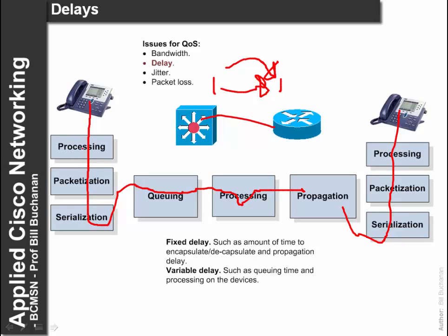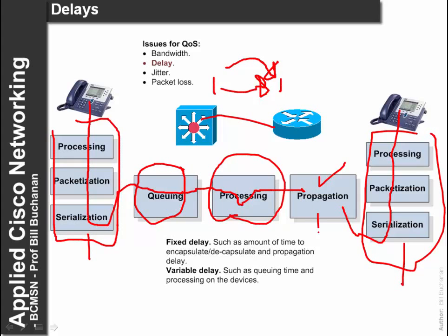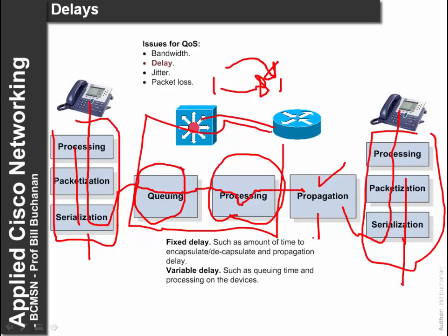The fixed delays typically include the time to propagate, which tends to be fairly fixed. But the time in queues can be variable depending on the number of data packets on the network, and the time taken to process will also be fairly variable. The propagation delay, processing, packetisation and serialisation are fairly fixed elements, so it is possible to estimate some of these. The variable elements are the queuing time and the processing time.